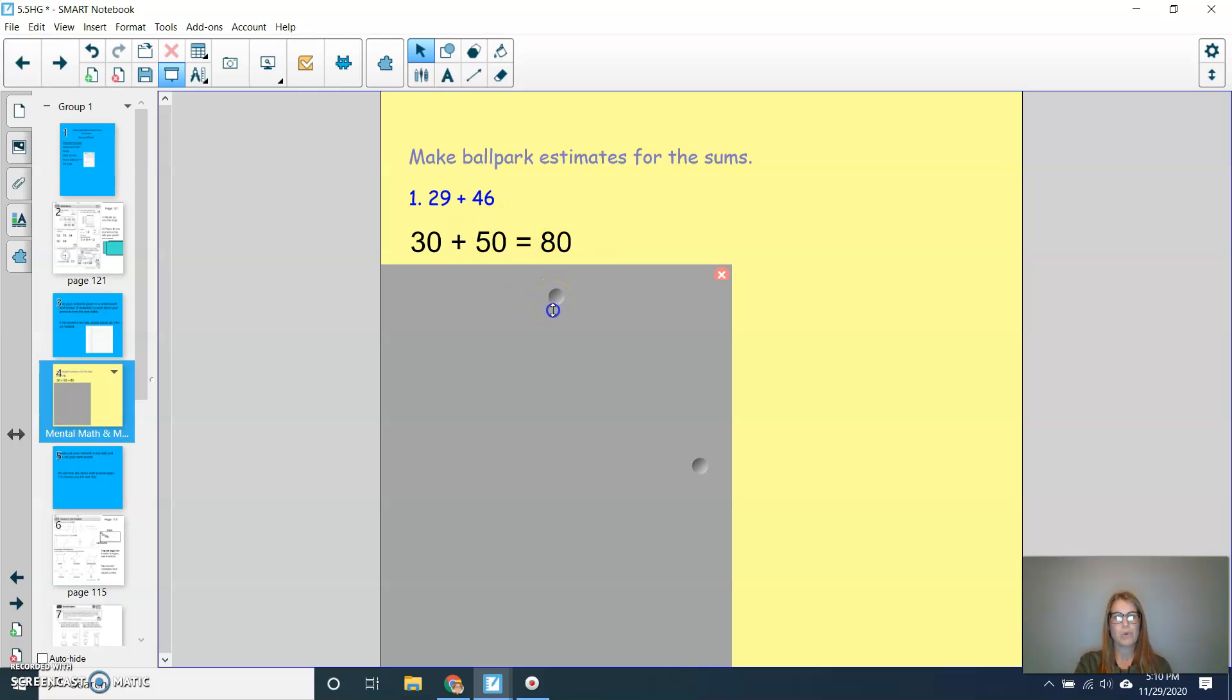So let's try three more. So now for this next one, can you tell me the ballpark estimate for 17 plus 84? Press pause and then play to check. So 17, you should have said would round to 20. 84, since it's a 4, we know that that's going to be closer to 80. So 20 plus 80 is equal to 100.